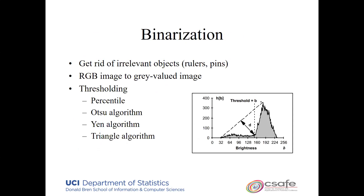The binarization step occurs because bloodstain patterns typically appear on some kind of background that is not necessarily white — often an off-white — so there's a boundary to draw between fainter stains and the background. There are a variety of thresholding algorithms for this; we used the ATSU algorithm that Arthur et al. have been using.